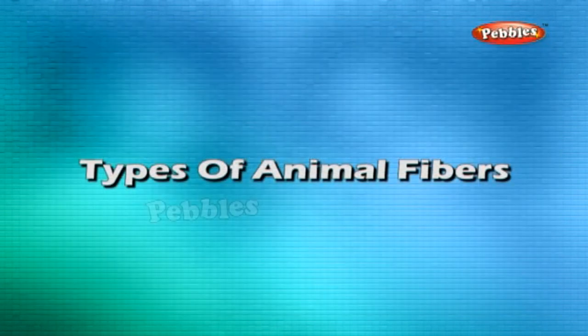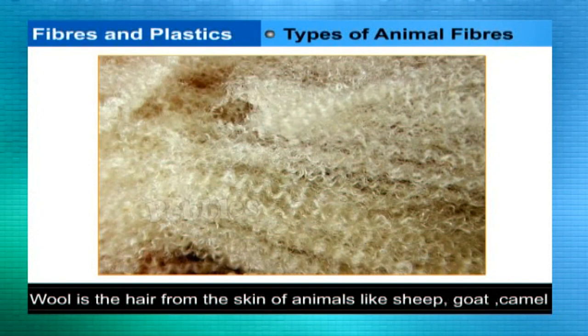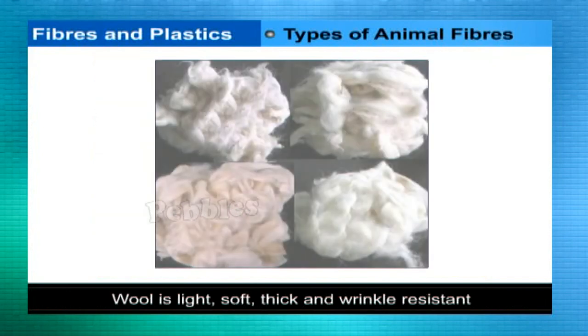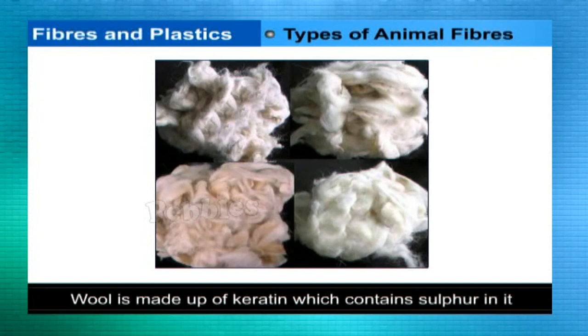Types of animal fibers. Wool is the hair from the skin of some animals like sheep, goat, and camel, which is twisted to make long strands. Wool is light, soft, thick, and wrinkle-resistant. It is made up of keratin which contains sulfur. The world's finest wool comes from the fleece of merino sheep. Fleece is the thick coat of hair on the body.